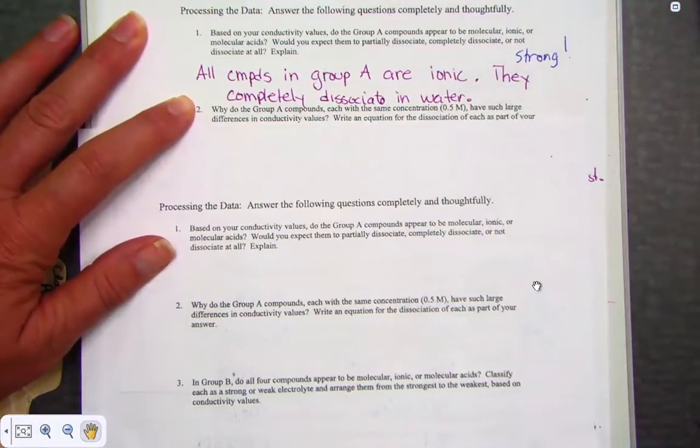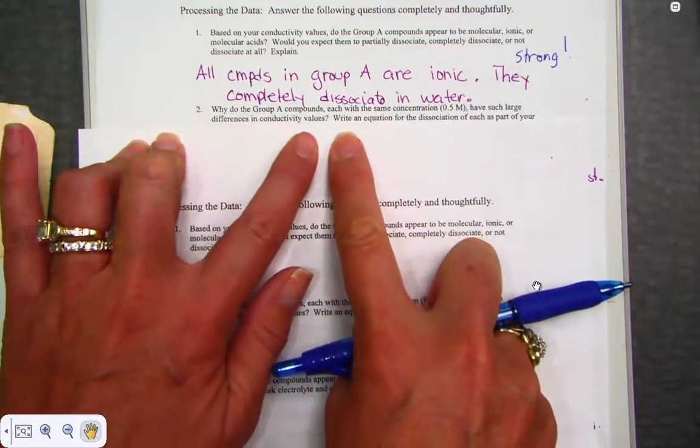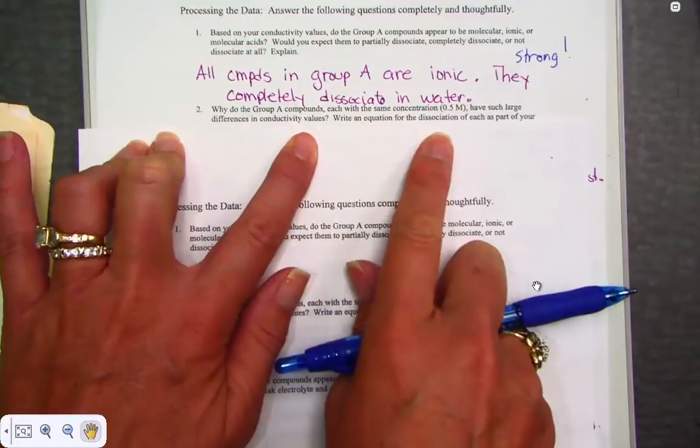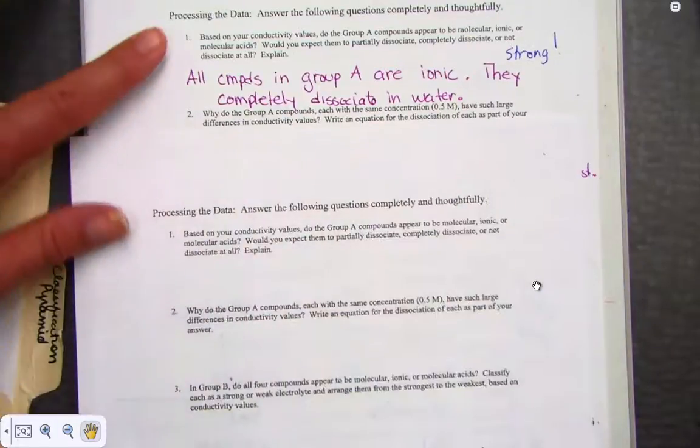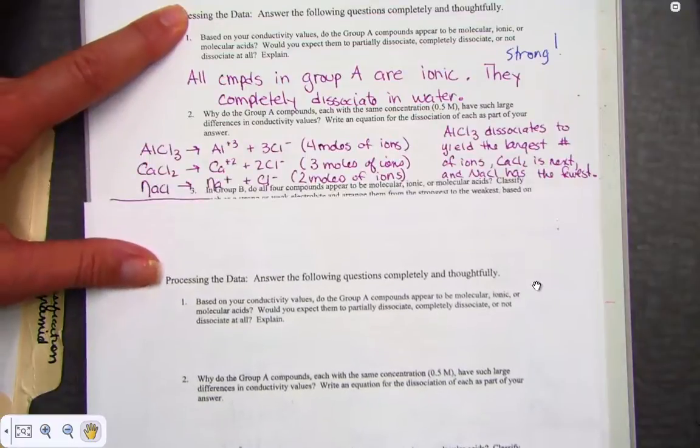Why do the group A compounds, each with the same concentrations, have a large difference in conductivity values? And write those equations for dissociation here. Well, again, commenting about the number of ions that came out.